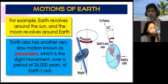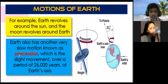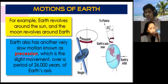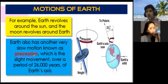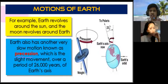For example, the earth revolves around the sun and the moon revolves around the earth — that's revolution. Earth also has another very slow motion known as precession. Aside from rotation and revolution, there is another motion called precession. Precession is a very slow movement — a period of about 26,000 years of the earth's axis.